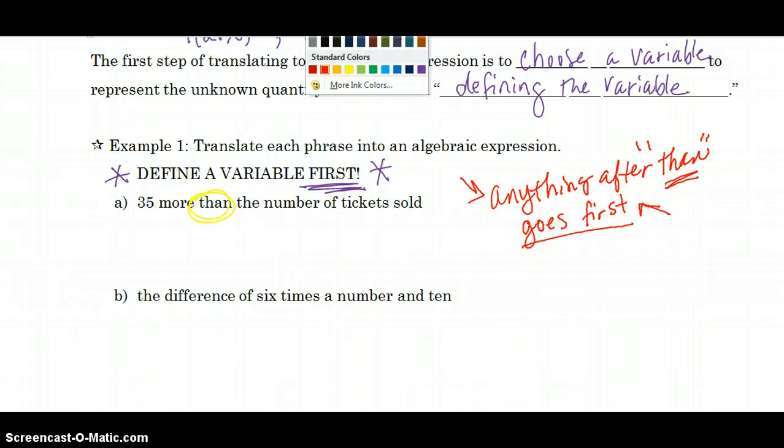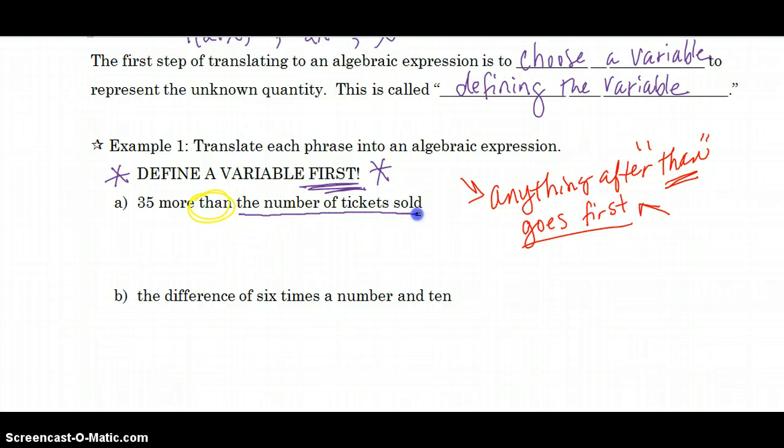Let me show you what I mean, what this is going to look like. Okay, 35 more than the number of tickets sold. So what do I not know? I do not know the number of tickets sold. So I need to come up with a variable to represent number of tickets sold. Since ticket starts with a T, I'm going to let T equal the number of tickets.